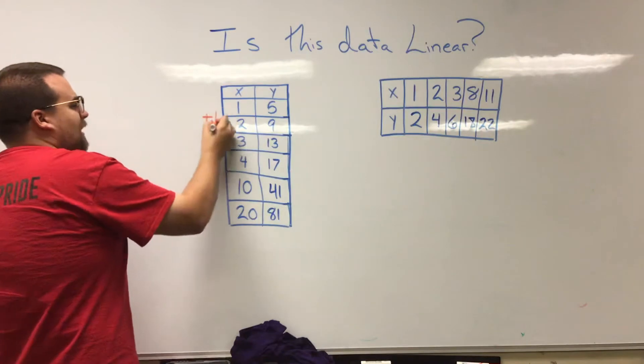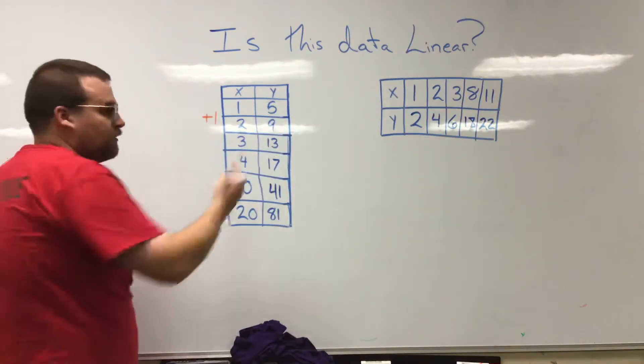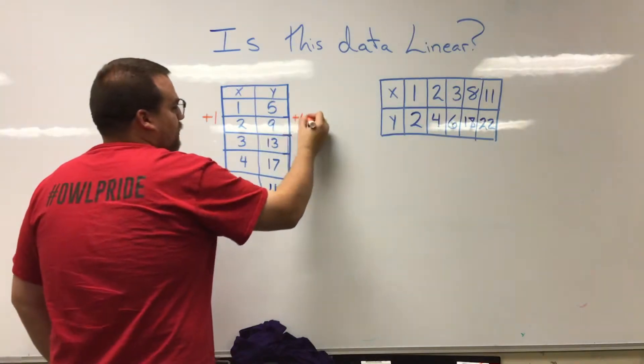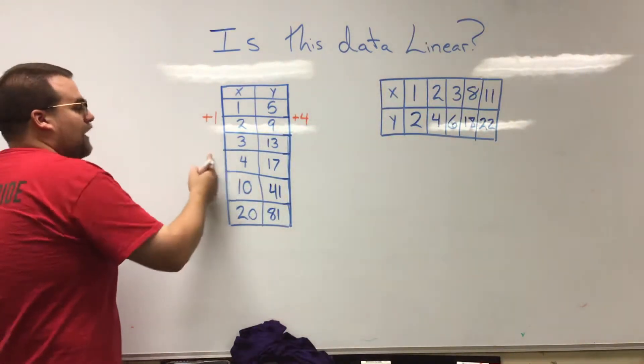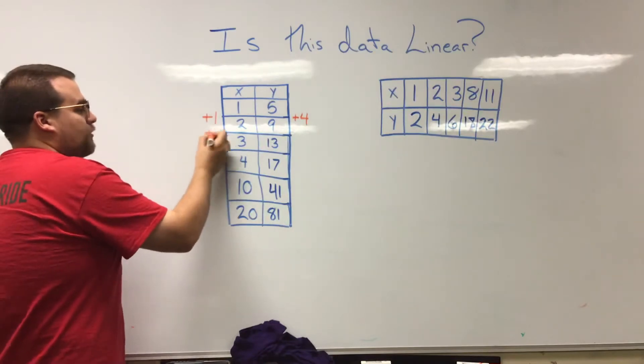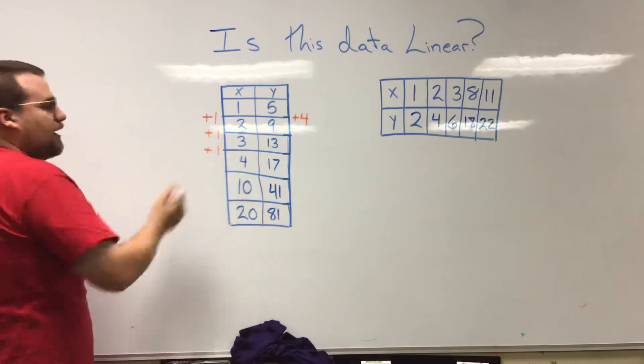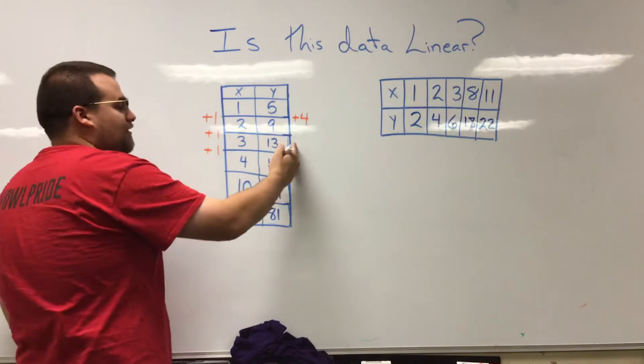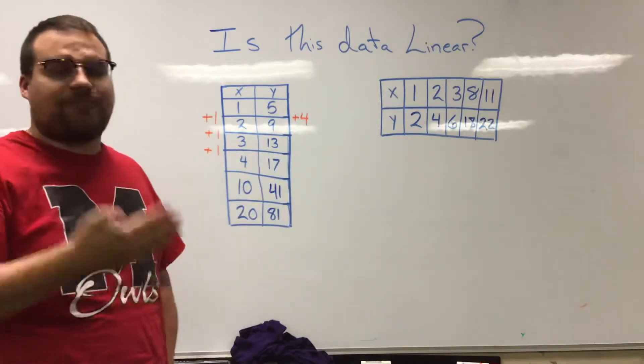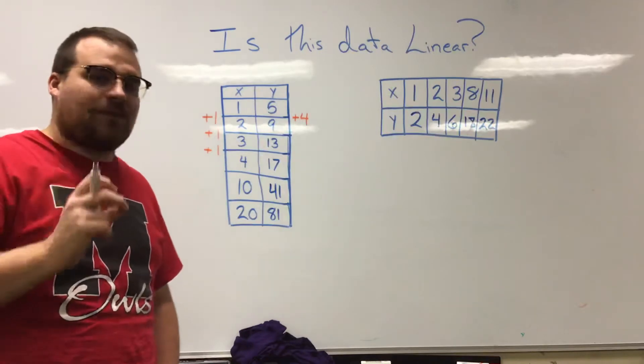So let's see. Between one and two my X goes up by one and my Y goes up by how many? Well, five to nine says my Y is going up by four. So now every time I go up by one, for example between two and three or between three and four, I should see a change of plus four in these as well if the data is linear, because I should always have that same amount of change.